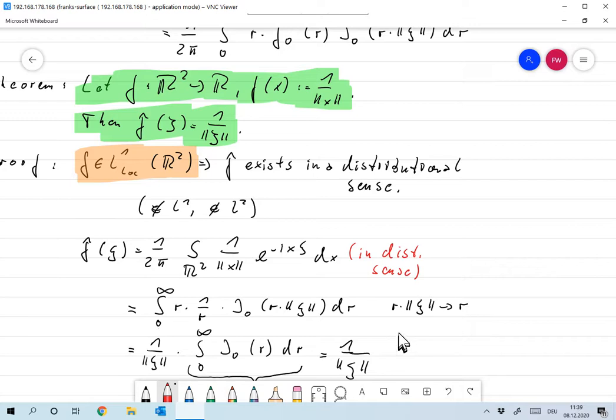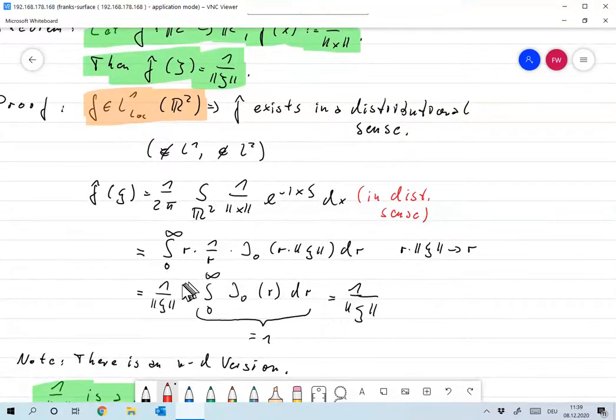And now I substitute R times the norm of xi by R. And I get that 1 over the norm of, I get an integration constant, 1 over norm xi. And the rest is just the R times R over R is 1. So I've just integral from 0 to infinity, j0 of R dr, which is obviously a constant.